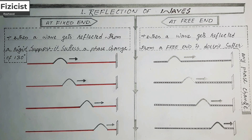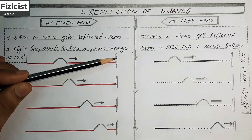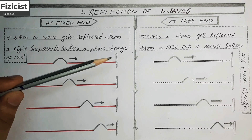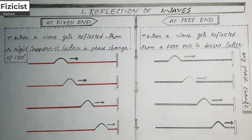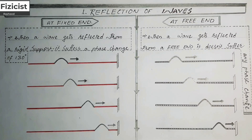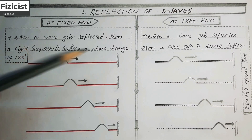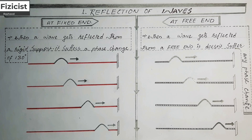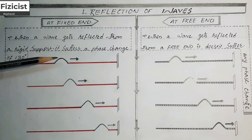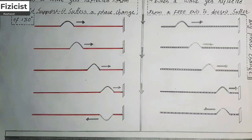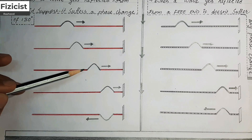Now let's talk about the reflection of a wave from a fixed end. As an example of a fixed end, here I have taken a wall to which I have tied a rope. The other end of the rope is free to move. This fixed end or wall is also called a rigid support. I am going to hold the free end and give an upward jerk, so a wave pulse or crest travels towards this rigid support.